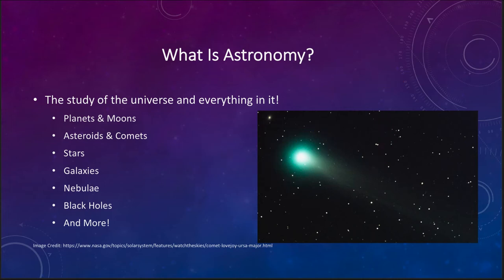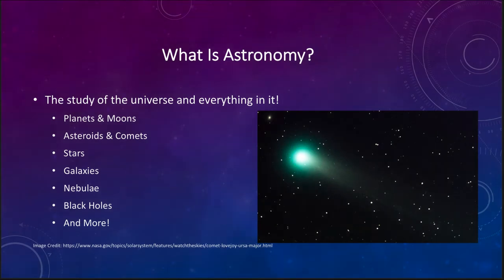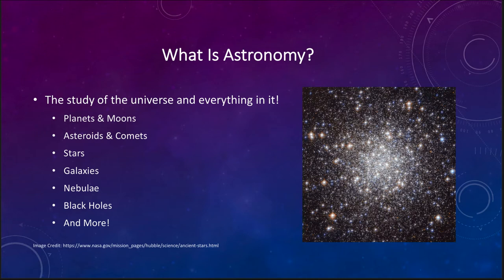Now not everything we study in astronomy is within our own solar system. We also look at other objects and that would include things like stars. A picture of an individual star doesn't look like much because stars are so far away that even to the largest telescopes they just look like points of light.